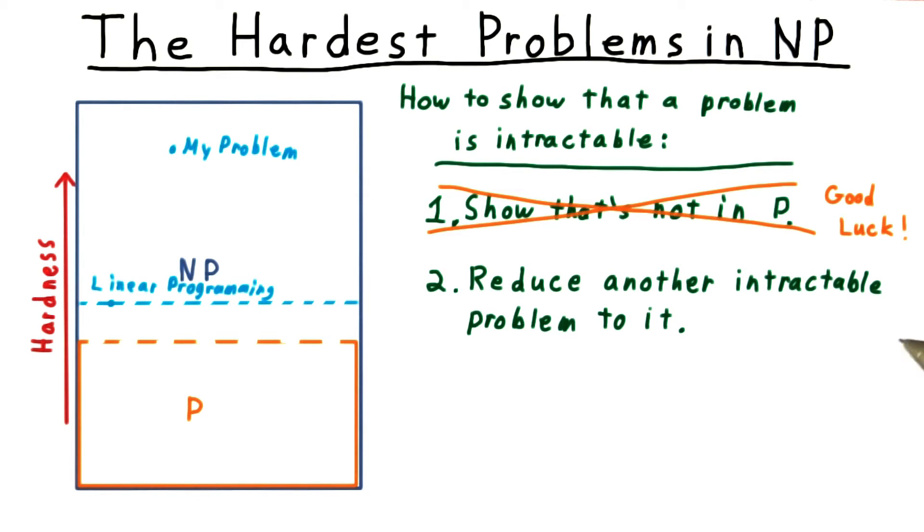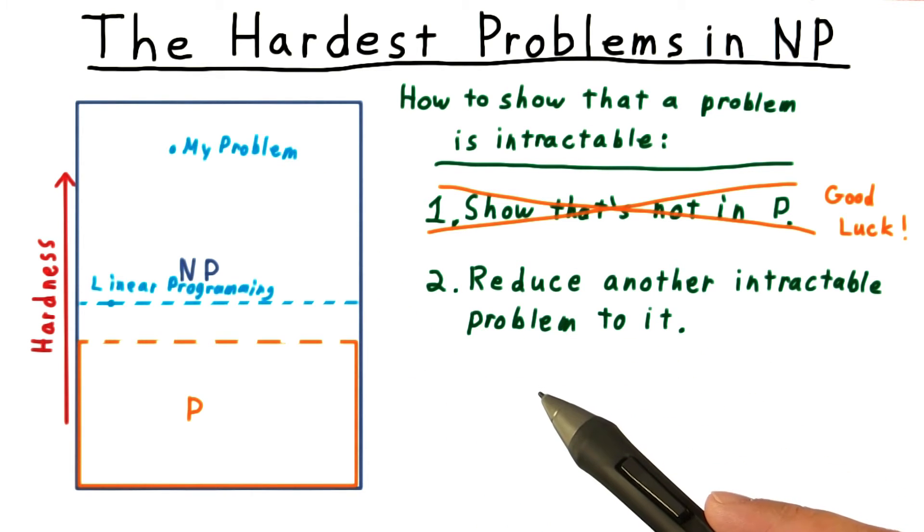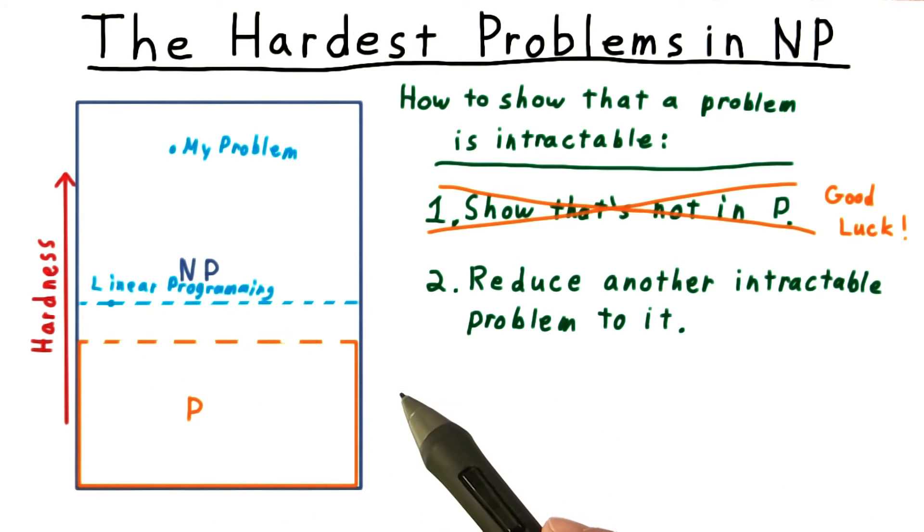Another option is to reduce another intractable problem to your problem. If you were working in the early or mid-1970s, you might have reduced linear programming to your problem.